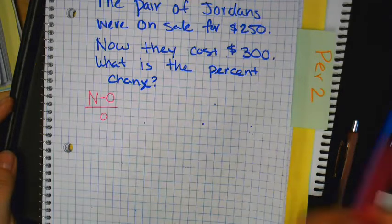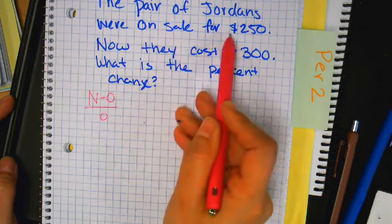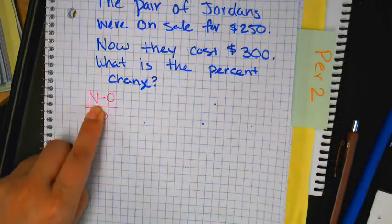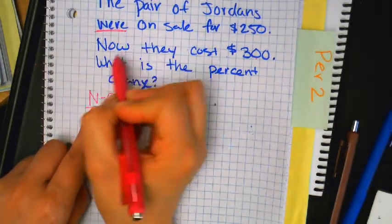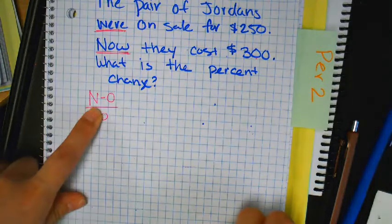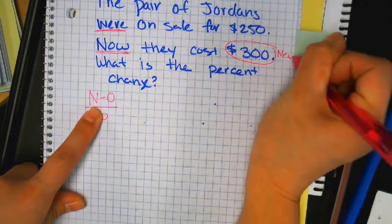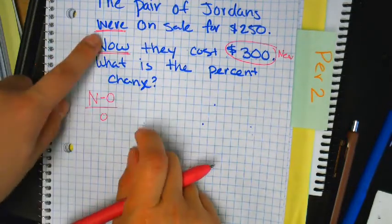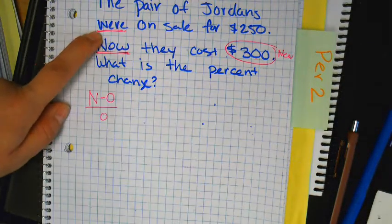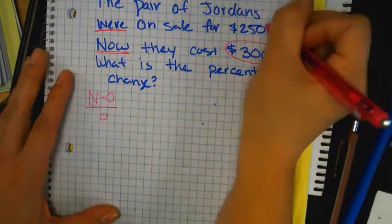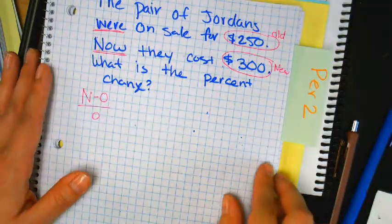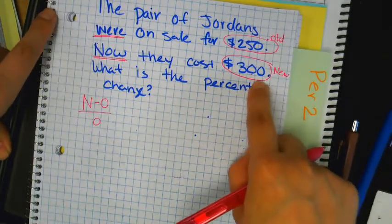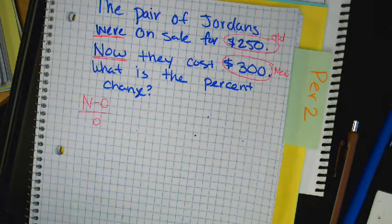Change. New. Old. Divided by old. Yes. So the pair of Jordans were on sale for $250. Now they cost $300. So what is my new price? Were? Now. So which one's my new? $300. So circle it and write N for new or new. Now. As in today. Now. Present tense. That's new. Old. Were. That's past tense. They were. You were 10 years old. You were. It already happened. This is old. So circle and write the word old. New. Because you have to be able to figure out which one's new and which one's old.